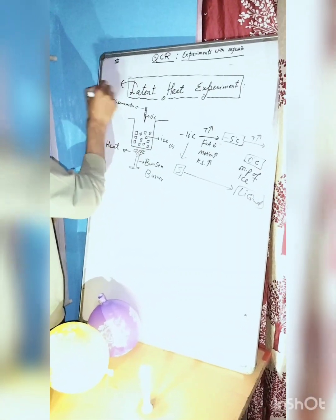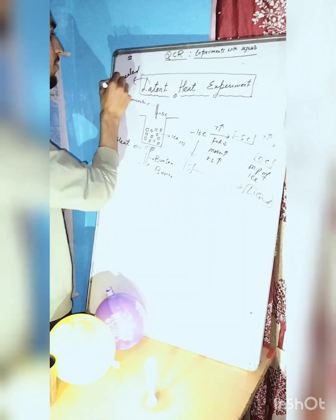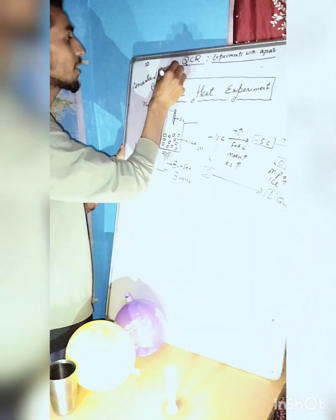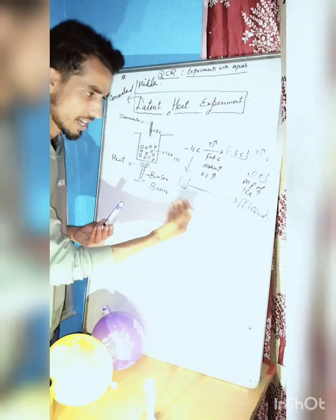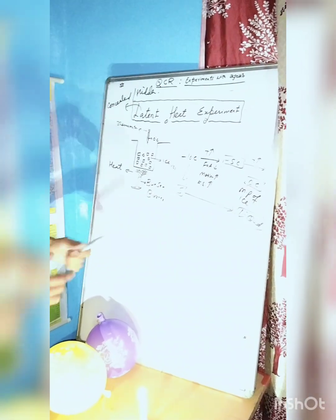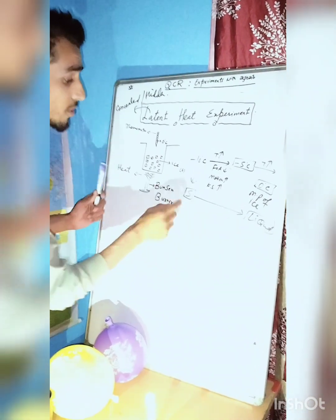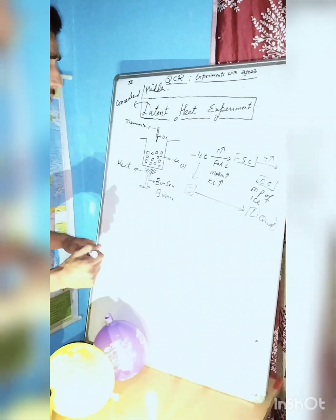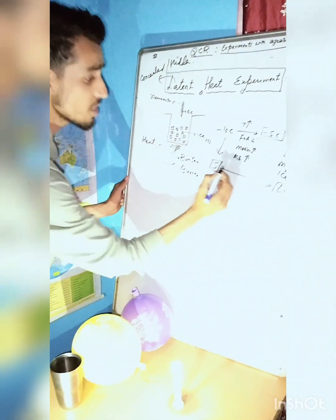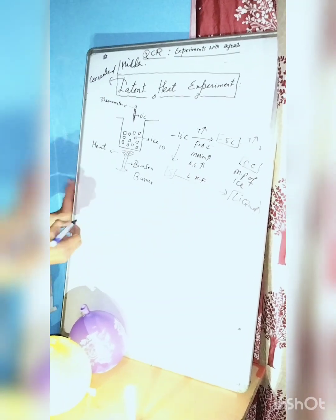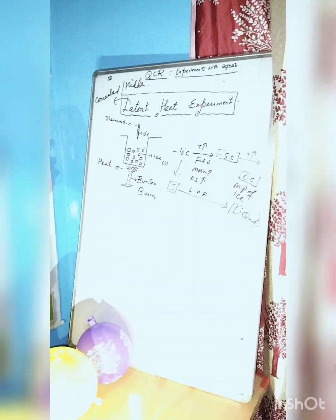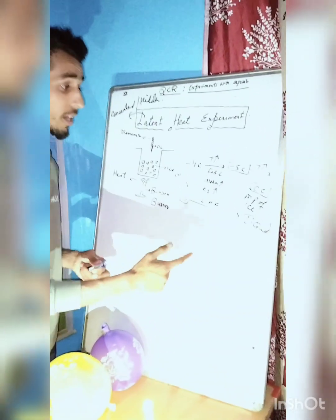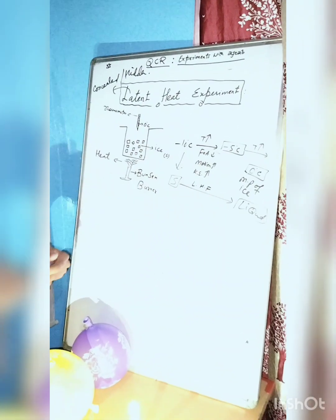Latent means concealed or hidden—something we cannot see with our eyes, but inside, a change is happening. The solid has been converted into liquid. This phenomenon is called latent heat of fusion, and it converts solid into liquid at one atmosphere pressure and at the melting point, which is 0 degrees for ice.